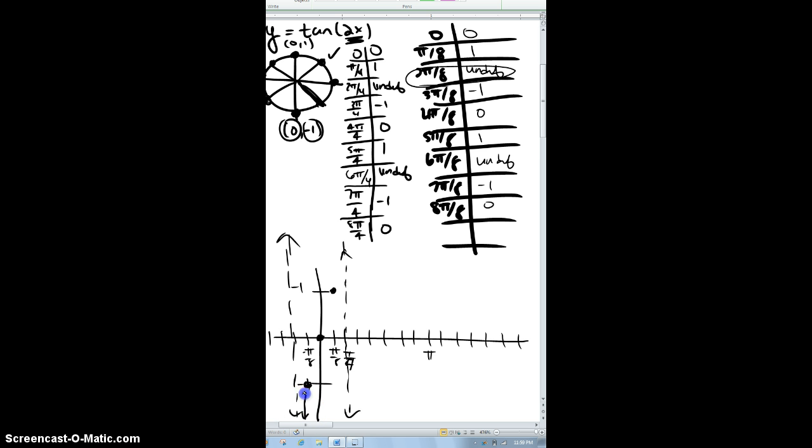And again, it gets really close but doesn't touch. So where I'm at at 3 pi over 8, which would be right here, I go down to negative 1. So there's 3 pi over 8. And then the next one is 4 pi over 8, which is pi over 2. That's at 0. And then my next one is up at 1, which, again, once you see the pattern, then you're like, of course. Here's my asymptote.